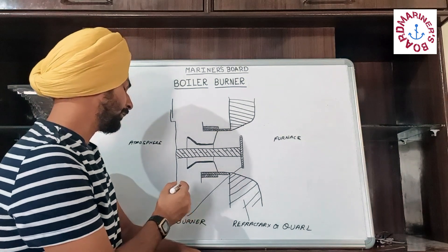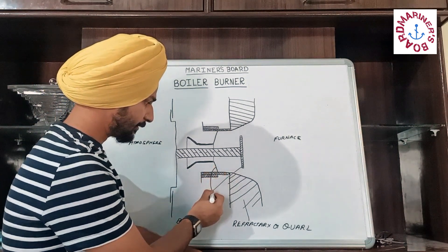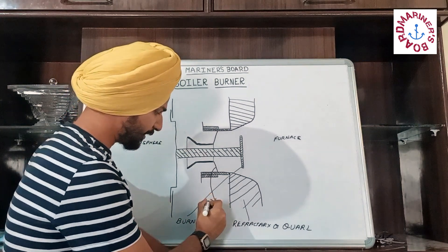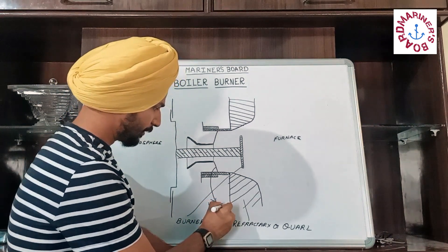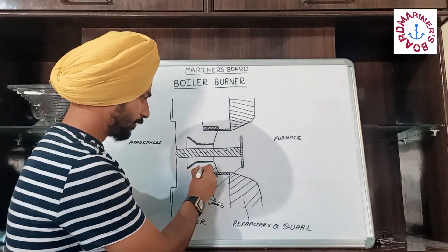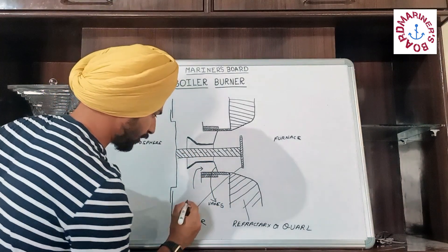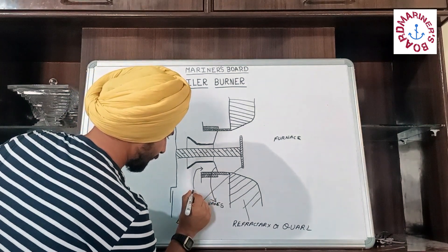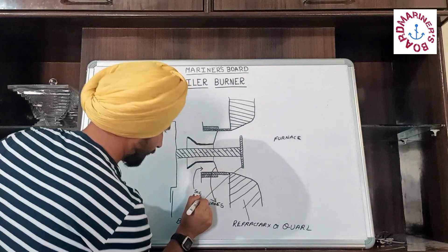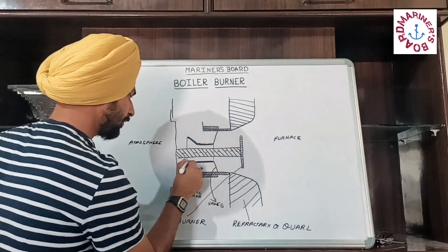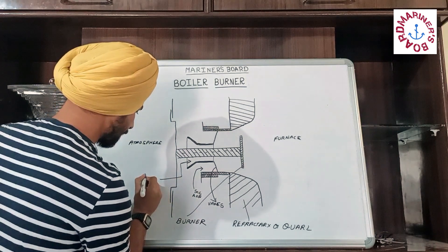This area here is called vanes. From here we get secondary air inside the boiler — that is secondary air. And from here we get primary air inside the boiler — this is primary air.